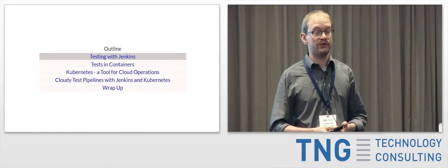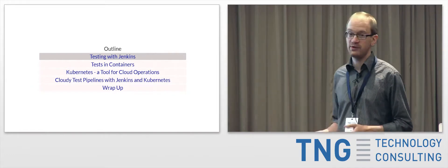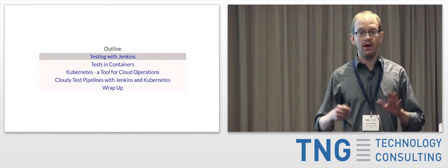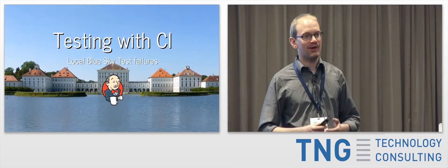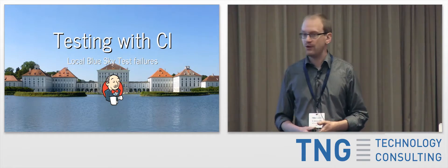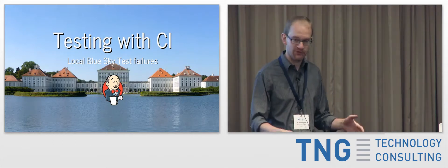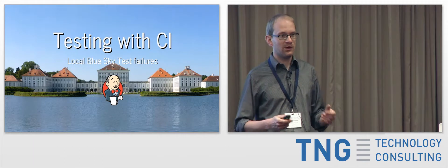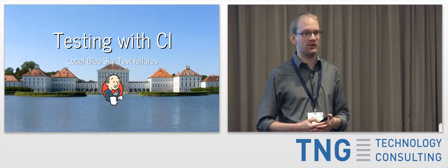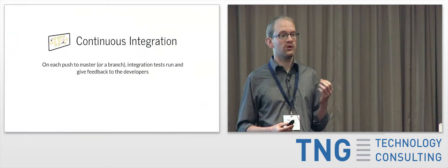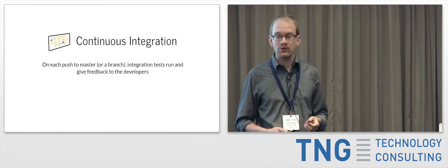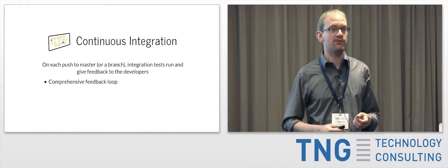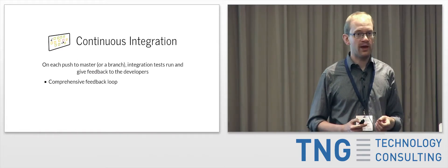My outline: first I will start with CI and Jenkins, then put the tests from a single server into containers, then present Kubernetes as a tool for cloud operations, and wrap up. Continuous integration means setting up development so you have a comprehensive feedback loop for every change that lands on the main branch of development.